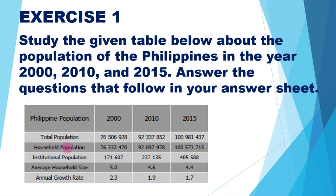We also have household population and institutional population for those years. The average household size was 5.0 in 2000, 4.6 in 2010, and 4.4 in 2015. The annual growth rate was 2.3 in 2000, 1.9 in 2010, and 1.7 in 2015.